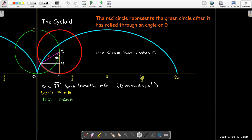The length of line segment PQ. Well, now I'm just using this right triangle here. PQ is opposite. So it would be R times sine theta. Now if I put those two together, that tells me that the x coordinate of point P is just going to be the length of OT subtract the length of PQ. And so I get R theta minus R sine theta.